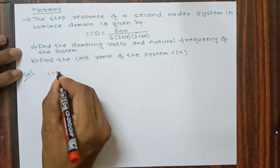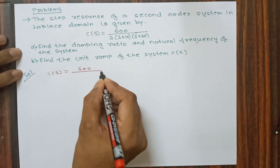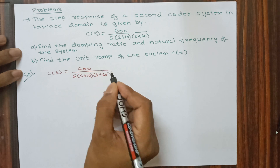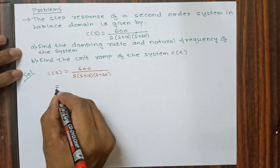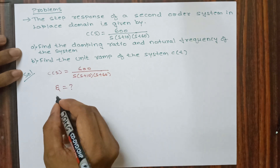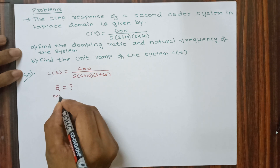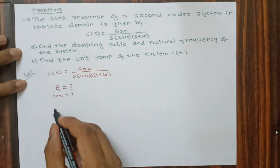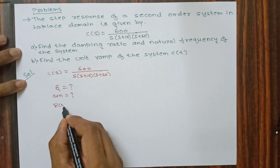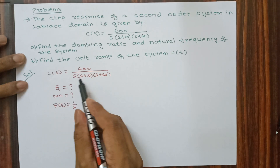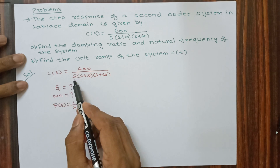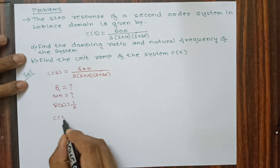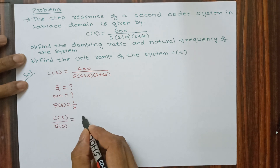C(s) = 600 / [s(s+10)(s+60)]. In the first case we need to find damping ratio zeta and natural frequency omega_n. Since the question gives a step response, R(s) = 1/s. Taking R(s) to the left hand side gives C(s)/R(s) = 600 / [(s+10)(s+60)].